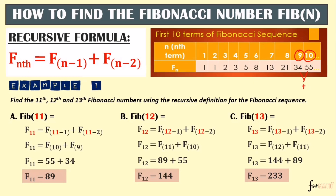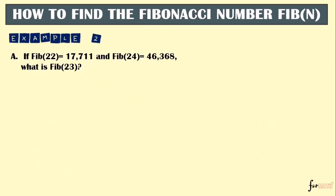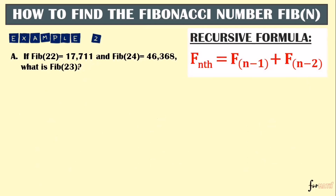Okay, let's have another example — Example 2. If Fib(22) = 17,711 and Fib(24) = 46,368, what is Fib(23), the 23rd term? Using the recursive formula, let's identify what Fib(23) will be.